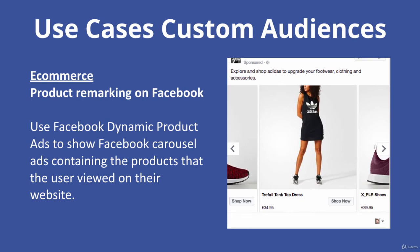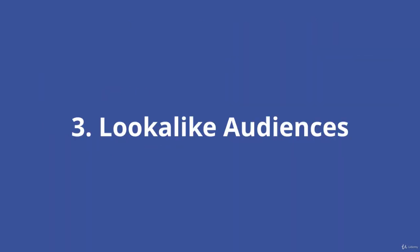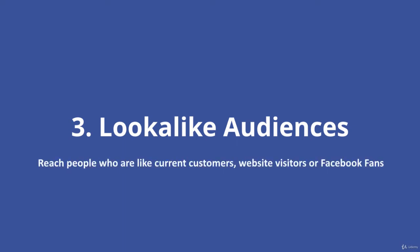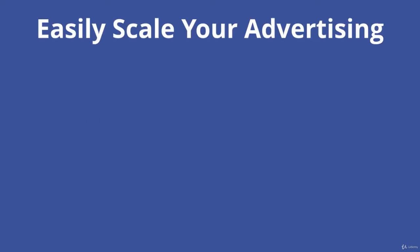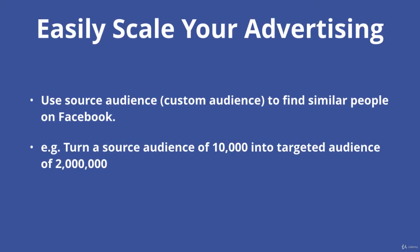You can see the power of remarketing using custom audiences over just targeting people by interests who may be interested in your product but haven't even visited your website. The third and final way to target on Facebook is through lookalike audiences, which are really a marketer's best friend because they allow you to scale your marketing efforts extremely efficiently. A lookalike audience helps you reach people who are like your current customers, website visitors, or Facebook fans. You use a source custom audience and Facebook finds similar people — for example, scaling a source audience of 10,000 people into a targeted audience of 2 million similar people.